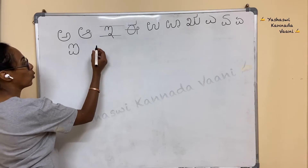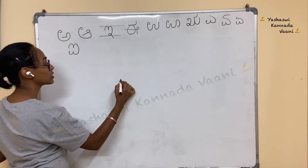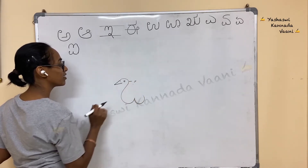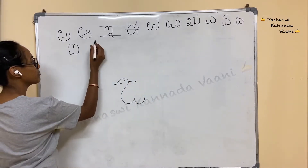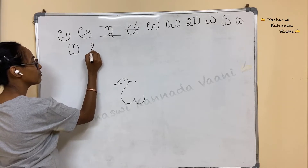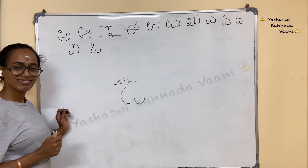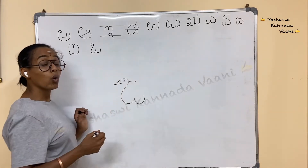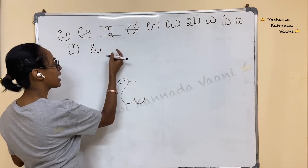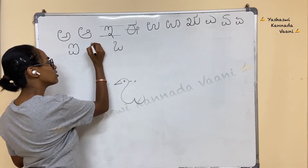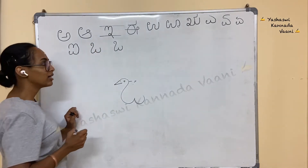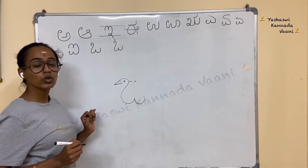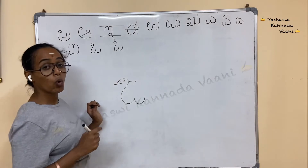Next, O (ಒ). Remember you draw the swan — the bird. We write the same thing. O (ಒ). Next is O (ಓ). Write as it is, put a small zero here, and put a line — Kodu. Kodu is the line, the horn above the head. O (ಓ).